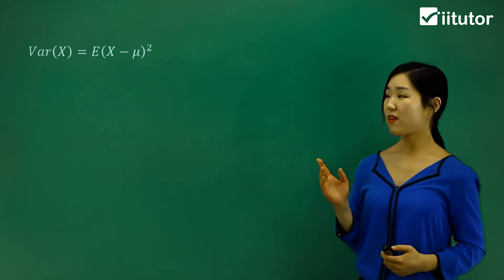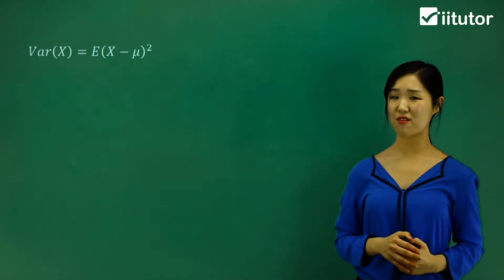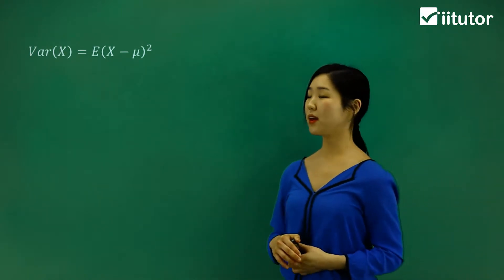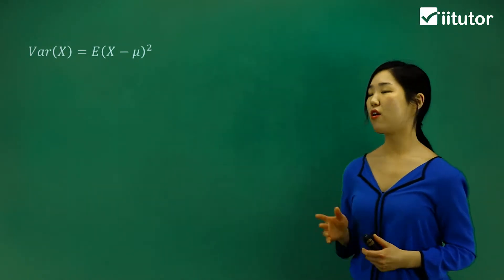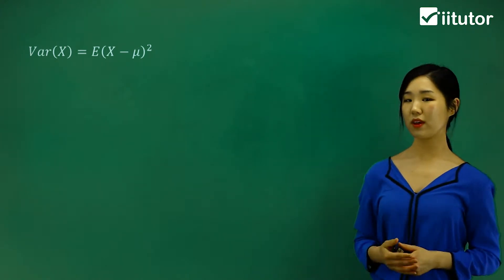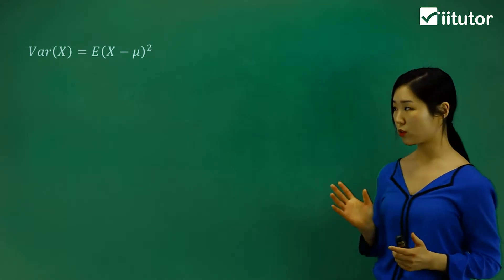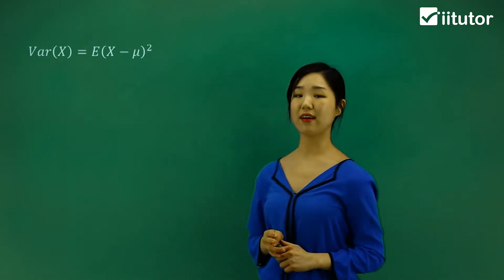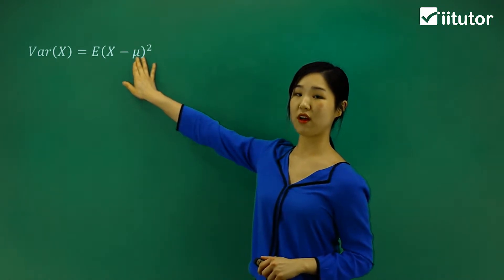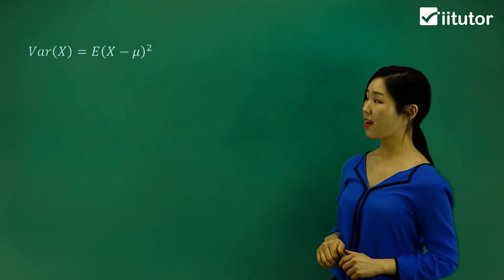If you have a look on the board, I've got a little formula for variance for you, and this is something you have to remember. The variance of X is simply going to be the expected value of (X minus mu) squared. Mu is the symbol we use for expected value — it's like an average. So that's how we calculate variance.